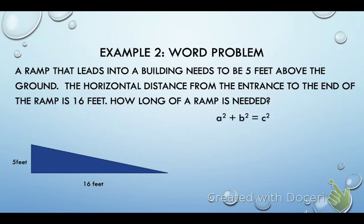Again, I'm going to write down a squared plus b squared equals c squared, because that's the formula I need to use. My two legs are 5 squared and 16 squared. That equals c squared. 5 squared is 25. 16 squared is 256. And c squared equals, that's what we're trying to find.